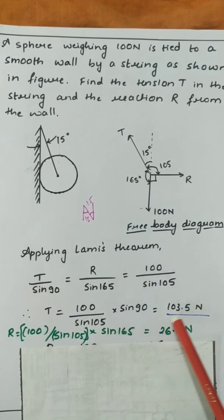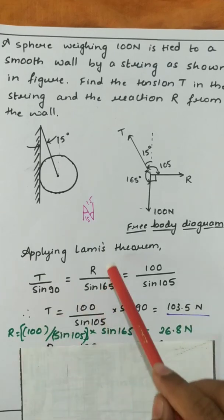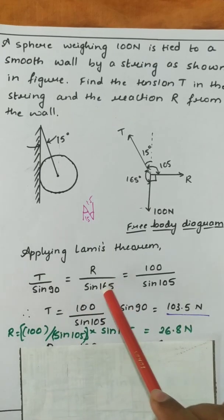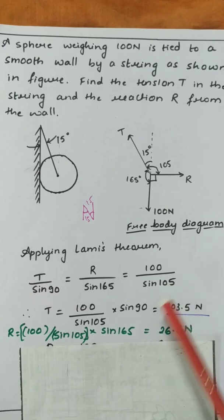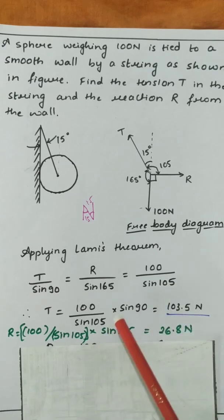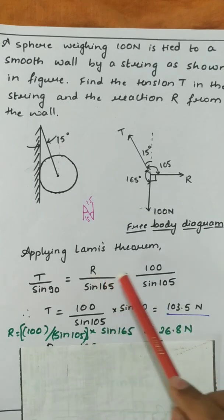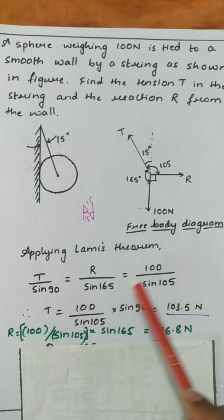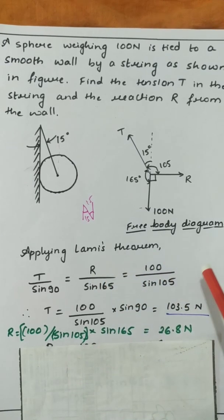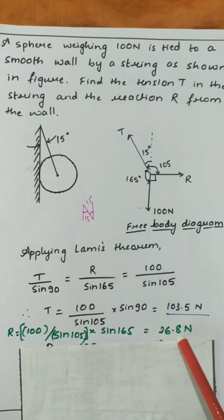Considering T by sin 90 and 100 by sin 105, we get T equal to 103.5 N. Similarly, taking R by sin 165 equal to 100 by sin 105, we get R equal to 100 divided by sin 105 multiplied by sin 165, giving us 26.8 N.